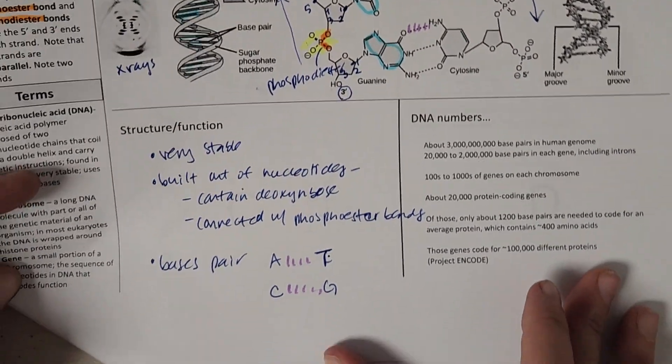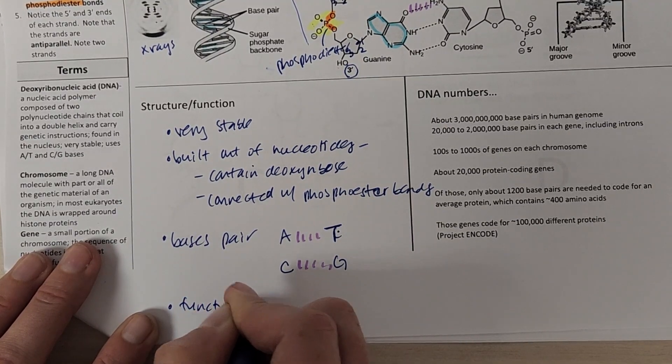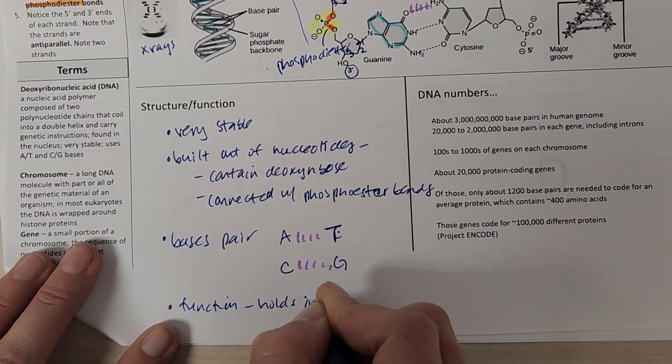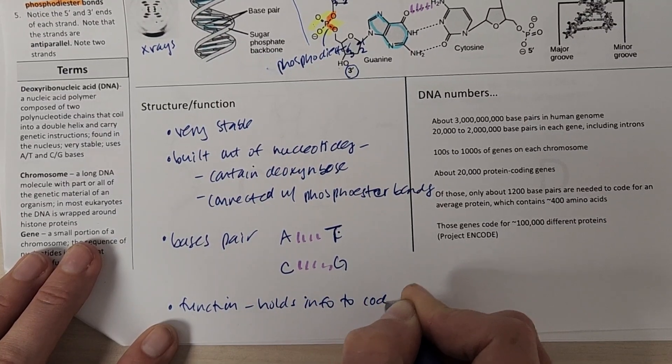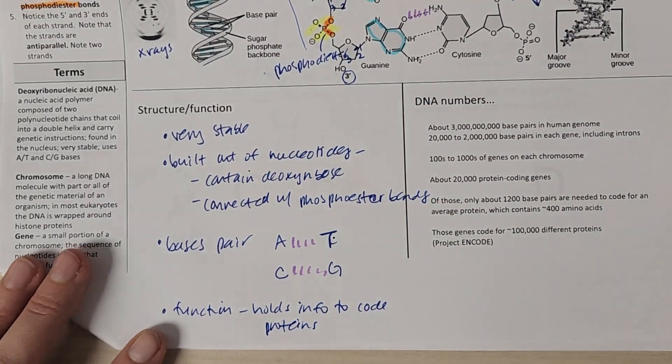So we've got base pairs. And then essentially, our function is to be the instruction manual. So holds lots of info to code proteins. So holds info to code proteins.